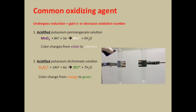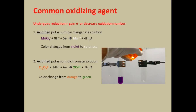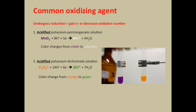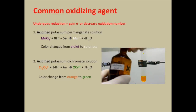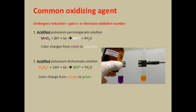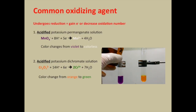On the left hand side is the acidified potassium permanganate and on the right hand side is acidified dichromate. After adding some reducing agent, you can see the left hand side solution turn from violet to colorless, and the right hand side turns from orange to green.